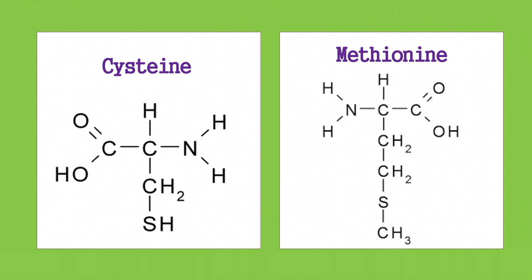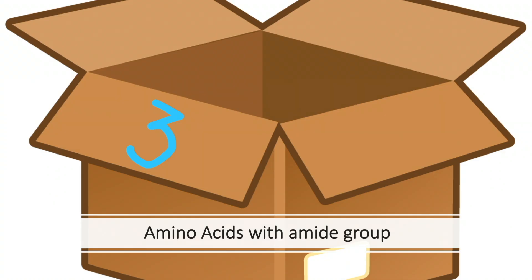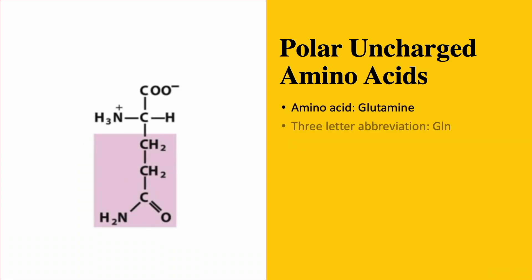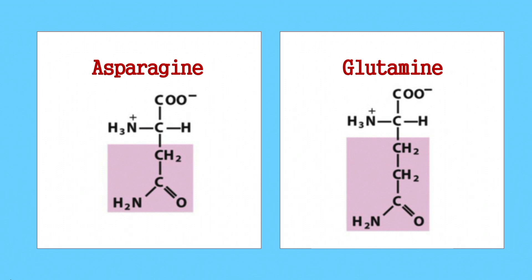Now let's look at the remaining two amino acids — asparagine and glutamine — which fell in the third box containing amino acids with amide groups. They are the only two of the 20 amino acids that contain amide groups, so you only need to differentiate between them. In asparagine, there is one carbon atom separating the amide group from the alpha carbon, while in glutamine there are two carbon atoms. So if you can identify asparagine, you just need to add one more carbon between the R-group and the alpha carbon to get the structure of glutamine.